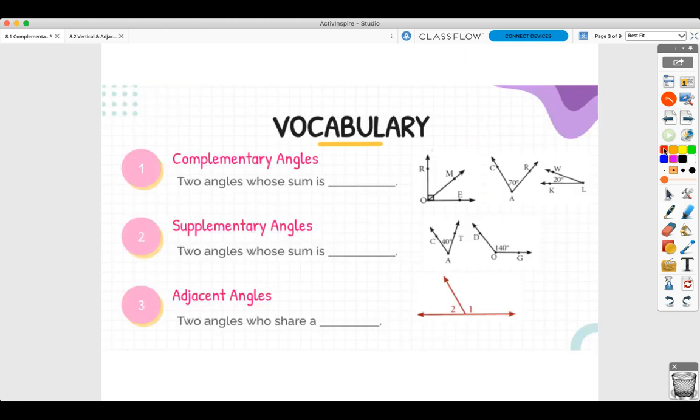So more vocabulary that has to do with this section. Complementary angles is two angles whose sum is 90 degrees. And you can show right angles by this box here. So just make sure you're aware of that. And then you have 70 plus 20, and they add up to 90, so they're complementary.